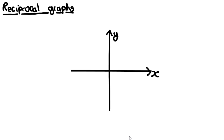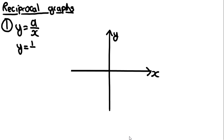This video is on reciprocal graphs. Reciprocal graphs have an equation where x is in the denominator of a fraction. You need to know how to sketch four types. The first is in the form y = a/x, where a is a positive constant. For example, sketching y = 1/x gives two curves: for negative x values it gives negative y values, and for positive x values it gives positive y values.